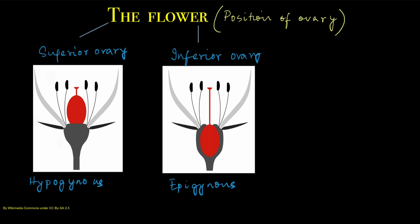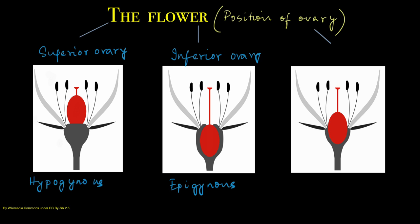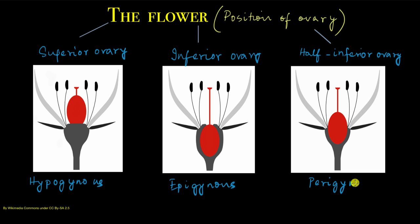Now there is a type of flower which has the ovary in between — neither quite superior nor quite inferior. The other parts of the flower are kind of in between, not quite above the ovary and not quite below the ovary. This is said to be a half-inferior ovary, and the flower is said to be perigynous.